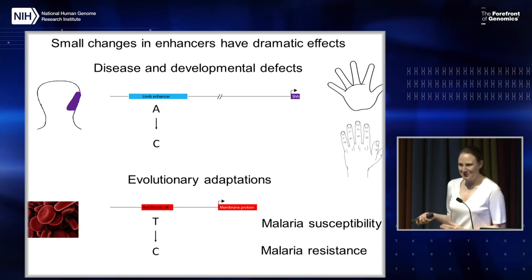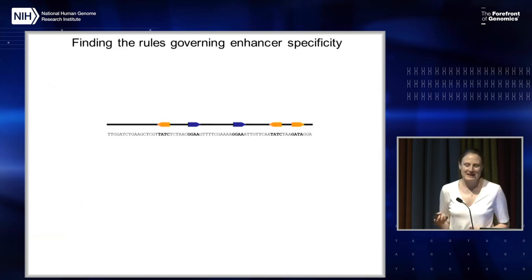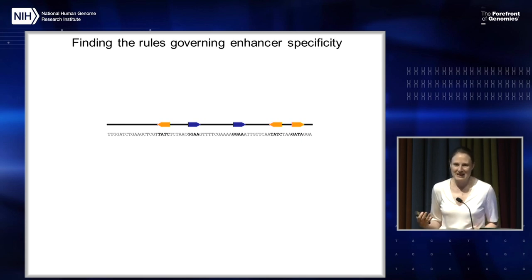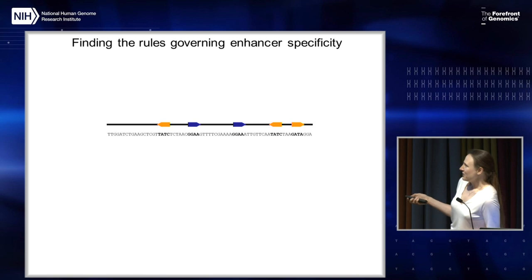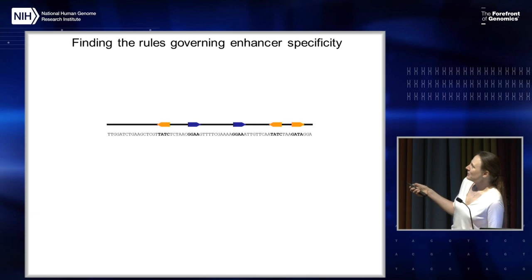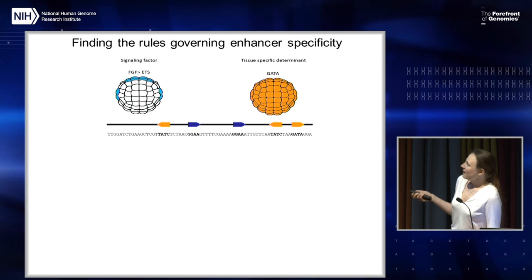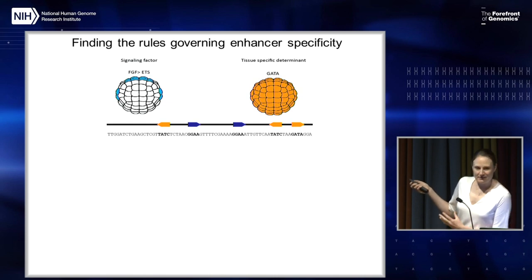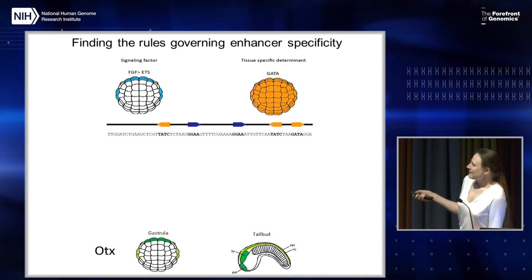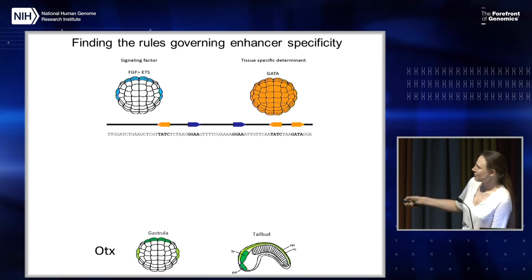I wanted to take a synthetic biology approach to understand how sequence encodes function, and see if we could get to some rules that could help us understand this in a general way. Here you can see we've zoomed in on an enhancer — enhancers contain binding sites. In blue there's a binding site and a different type of site in orange. This enhancer binds ETS transcription factor to the blue sites, and GATA, which is expressed in the ectoderm — the skin and the nervous system — binds to the orange sites. This leads to the turning on of gene expression in the overlapping pattern shown in green, turning on the gene OTX, which is important for neural development.